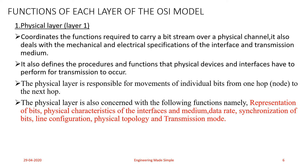The Physical layer also determines the physical topology of the network. The physical topology defines how the devices are connected to one another to make a network. Examples of network topologies are star topology, bus topology, ring topology, and so on.